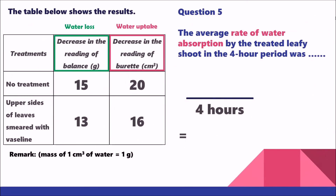Question 5 asks for the average rate of water absorption for Setup 2. The water uptake is 16 cm³. Dividing by 4 hours gives 4 cm³ per hour — or equivalently 4 grams per hour, because 4 grams of water equals 4 cm³ of water. So the rate can be expressed as either 4 grams per hour or 4 cm³ per hour.